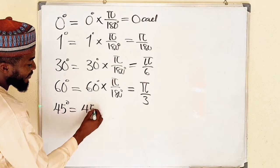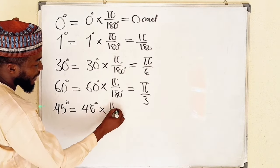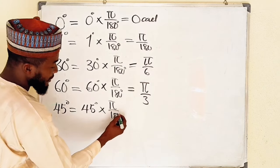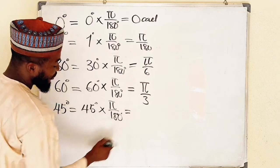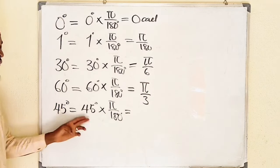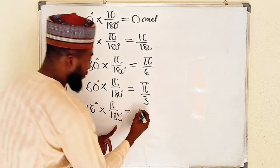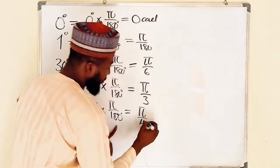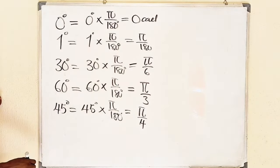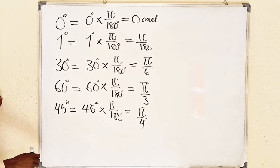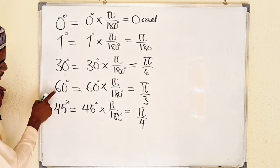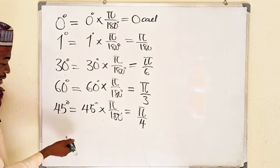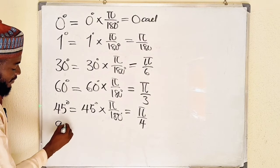Next is 45 degrees. 45 degrees is equal to 45 degrees multiplied by π divided by 180, which gives π divided by 4 radians. Note: 45 degrees should have been written before 60 degrees, but it doesn't matter.